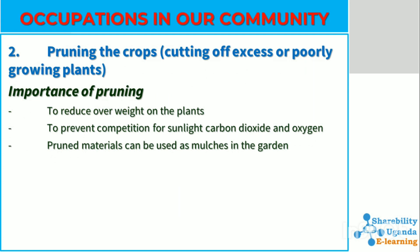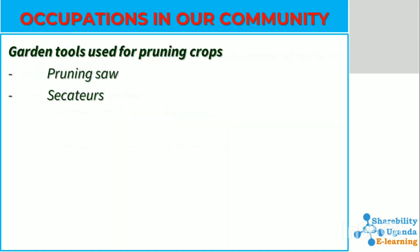Another method of caring for our root crops is pruning. Pruning is the cutting off of excess growth while plants are growing. Pruning helps to reduce overweight on plants and also helps to prevent competition for sunlight among the crops. Pruned materials can also be used as mulches in our gardens, which help to improve soil fertility. Garden tools used for pruning include pruning shears and secateurs — you can google to see how these tools look.